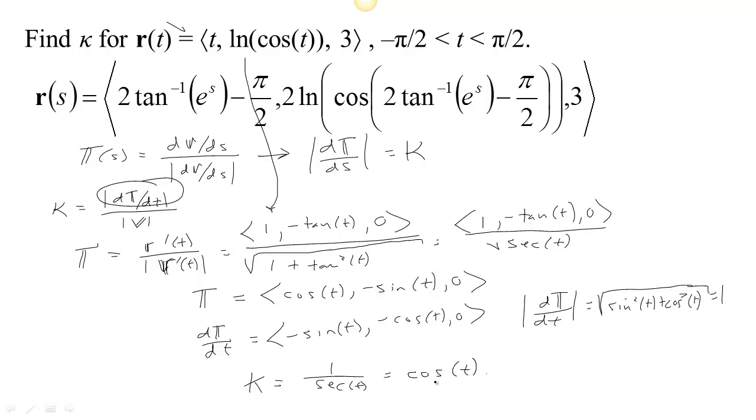That's the reciprocal of the secant, and the reciprocal of the secant is the cosine. So we have in this case, the curvature is equal to the cosine of t.